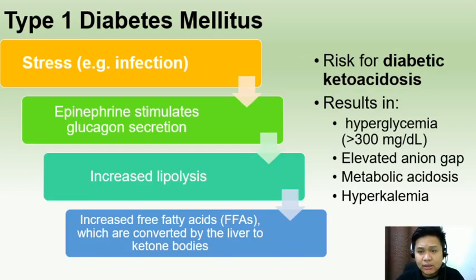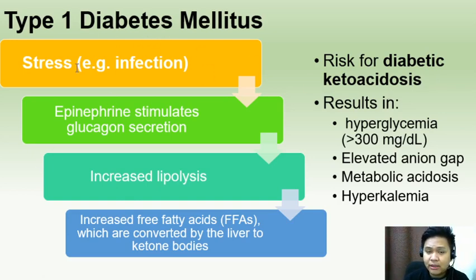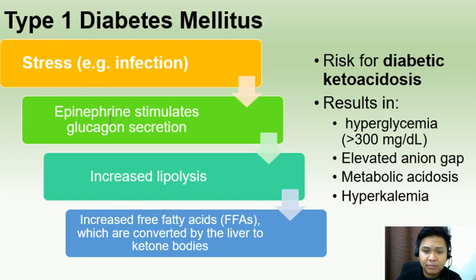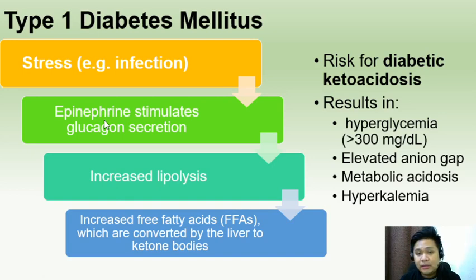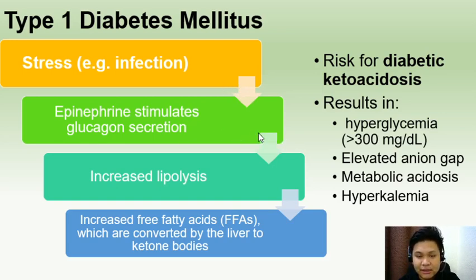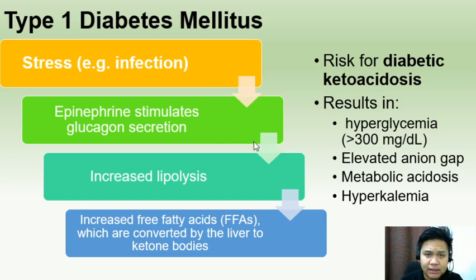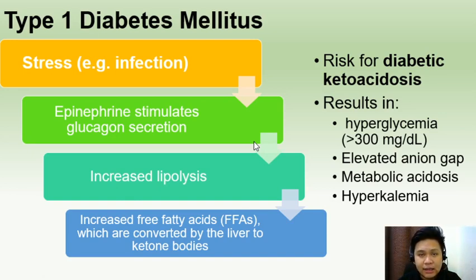Diabetic ketoacidosis is a hallmark of type 1 diabetes mellitus, usually triggered by severe stress such as infection. In severe stress, the patient secretes high amounts of epinephrine, which stimulates glucagon secretion. Glucagon increases lipolysis or fat breakdown, leading to increased free fatty acids, which are converted by the liver to ketone bodies. Remember the three ketone bodies: beta-hydroxybutyric acid, acetoacetic acid, and acetone.